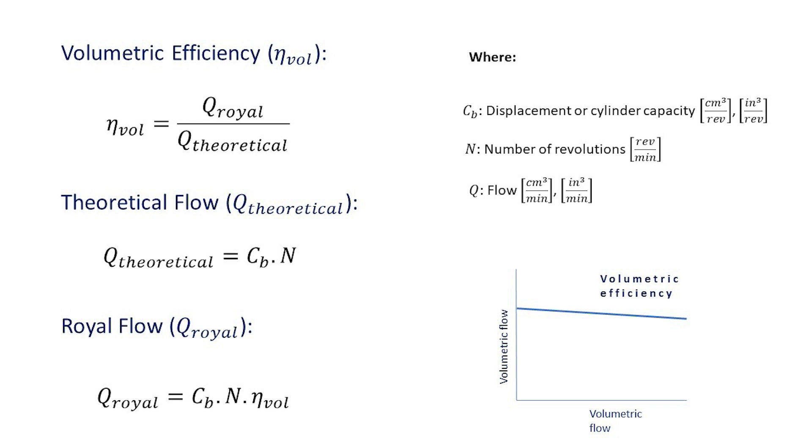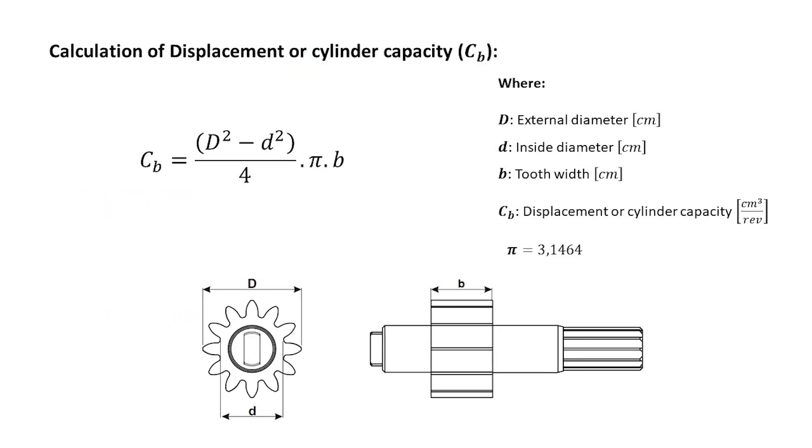The displacement of each pump is specified in its technical sheet, but it can also be calculated. For this type of pumps, the calculation is quite easy. The volumetric displacement is equal to the outer diameter of the gear squared, minus the inner diameter squared, divided by 4, all multiplied by PI, multiplied by the width of the toothing. Remember to replace the data in this formula with the units in centimeters, otherwise you will have to do a unit conversion at the end.